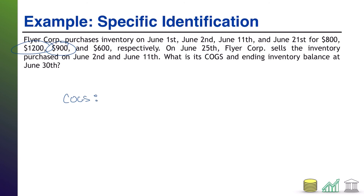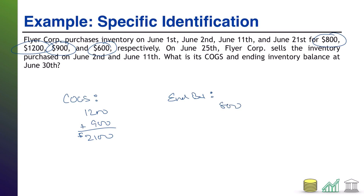So the cost of goods sold is $1,200 plus $900, which equals $2,100. The ending inventory balance is simply what's left — the June 1st purchase for $800 and the June 21st purchase for $600 — giving us $1,400 in ending inventory. Specific identification is as accurate as you can possibly get.